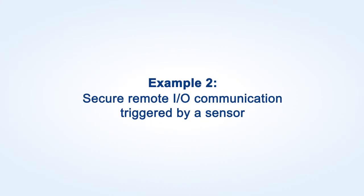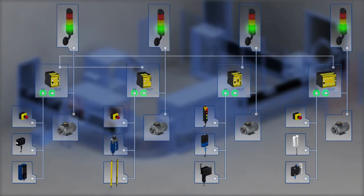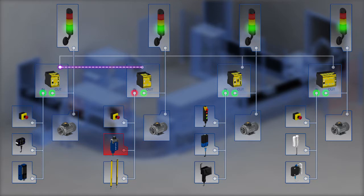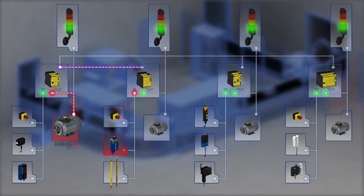Example 2 – Secure remote I/O communication triggered by a sensor. With the actuation of the sensor signals, such as by opening a safety door, remote I/O module A sends a telegram with the information 'sensor actuated' to the upstream safety controller. The communication is performed via the internal communication module via Ethernet SDDC. The internal logic of controller 1 detects the sensor signal and activates the drive in system component 1 via the safe outputs.